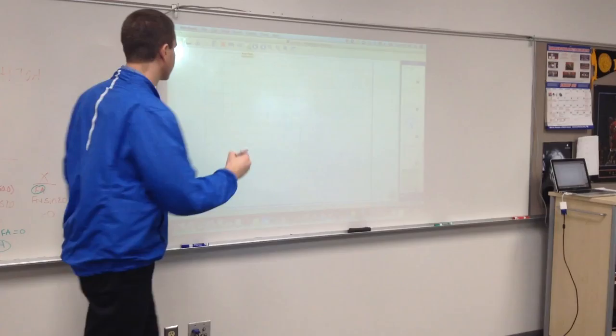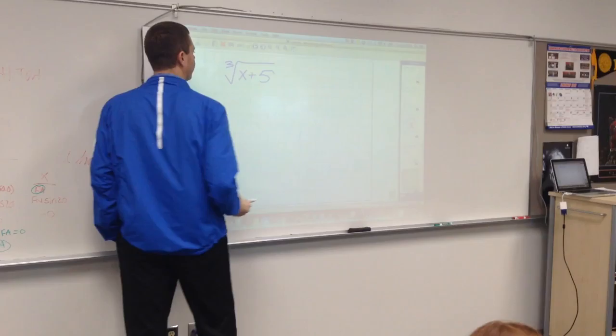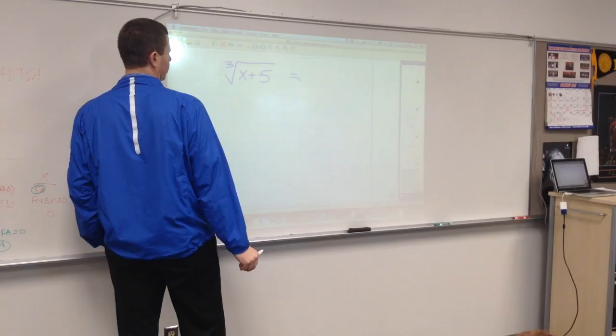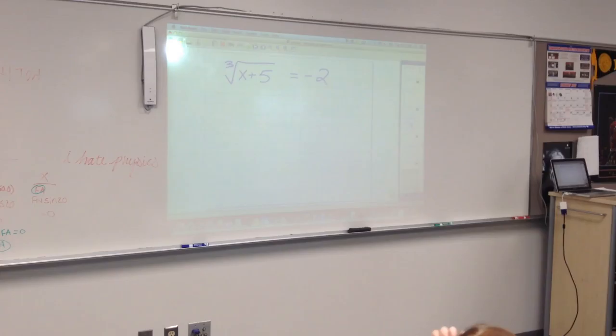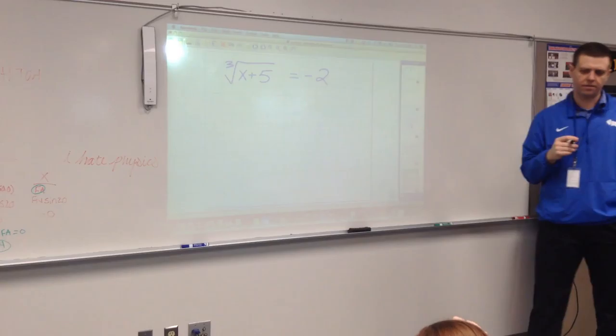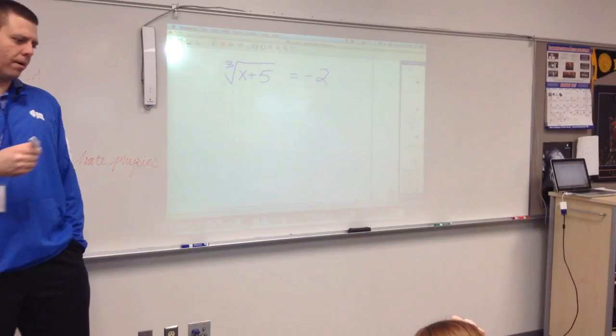So, you'll be working a lot with these. They might be as simple as this. Let's go, cube root of x plus five equals negative two. How would you solve this equation for x? Cube both sides of the equal sign. That's very important to say that part.